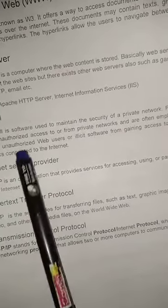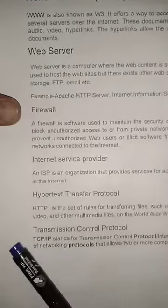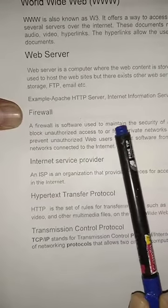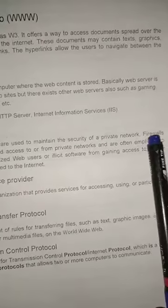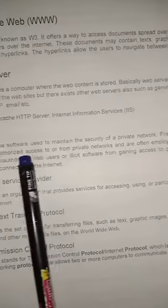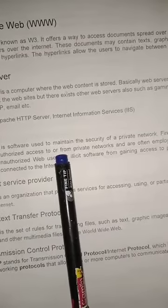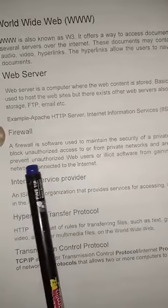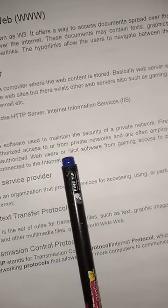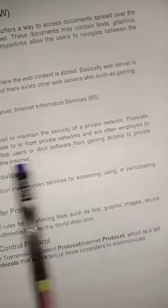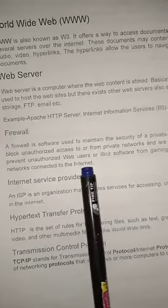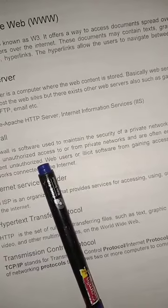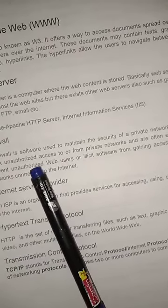Our next topic is firewall. A firewall is software used to maintain the security of a private network. Firewalls block unauthorized access to or from private networks, and are often employed to prevent unauthorized web users or illicit software from gaining access to private networks connected to the internet. In short, a firewall secures your network and restricts unauthorized access to your system.